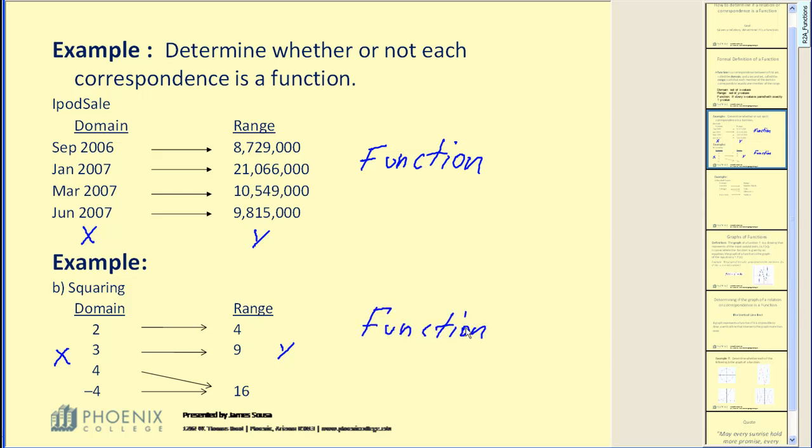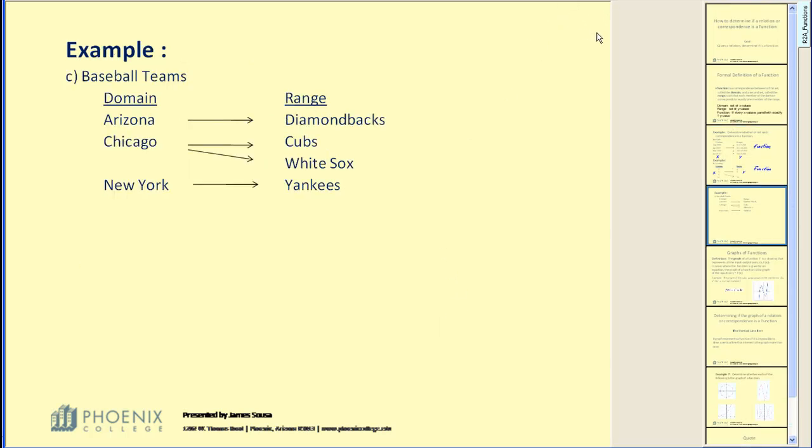Let's look at one more that's written in the mapping form as well. Over here on the left, we have the domain, which would be the town. So these are x values. And over here, the range would be the y. It would be the baseball teams. And this does fail the function test because Chicago, this x value is paired with two different y values. So this is not a function.